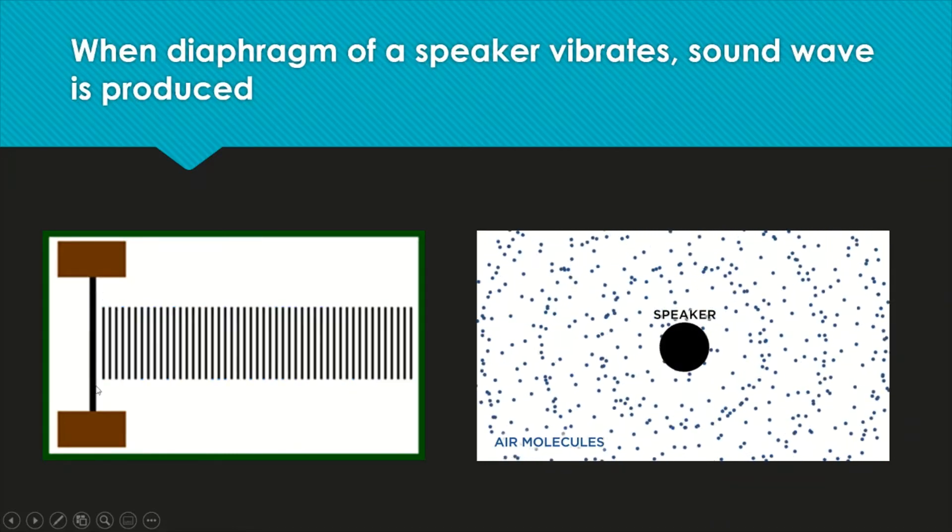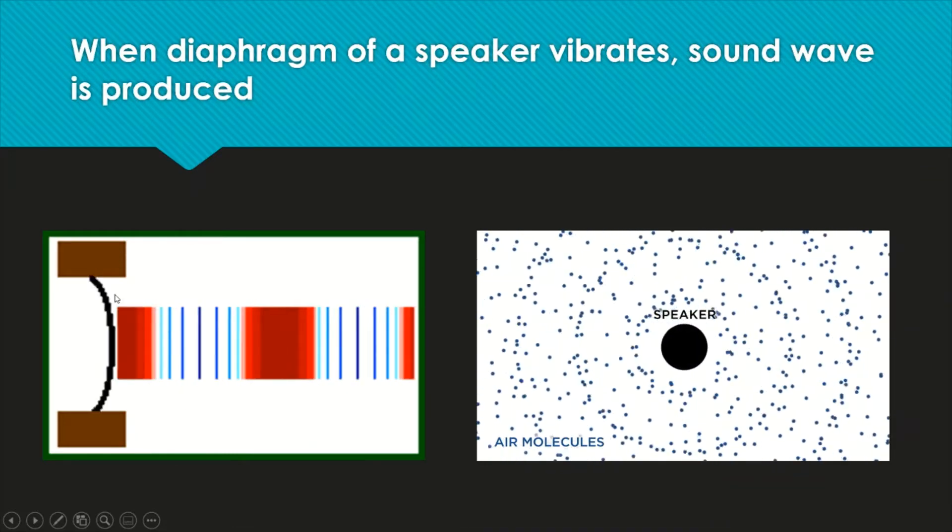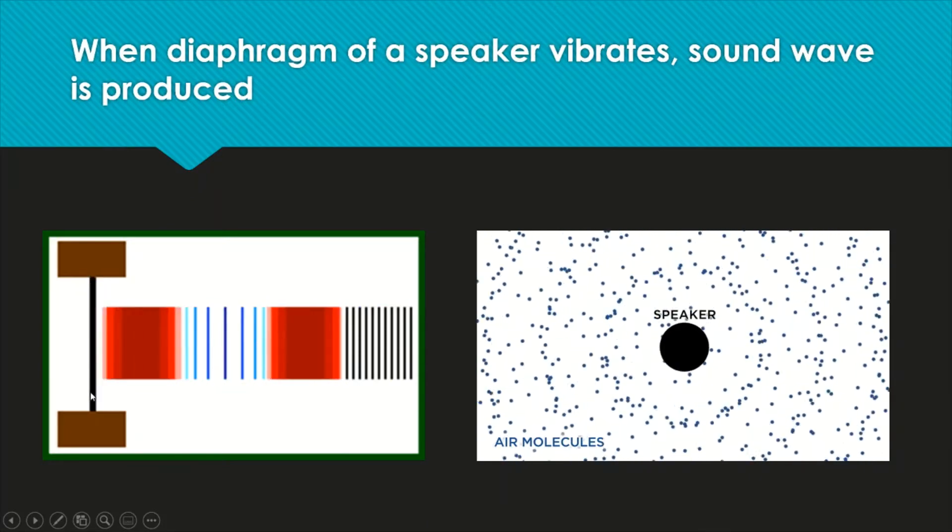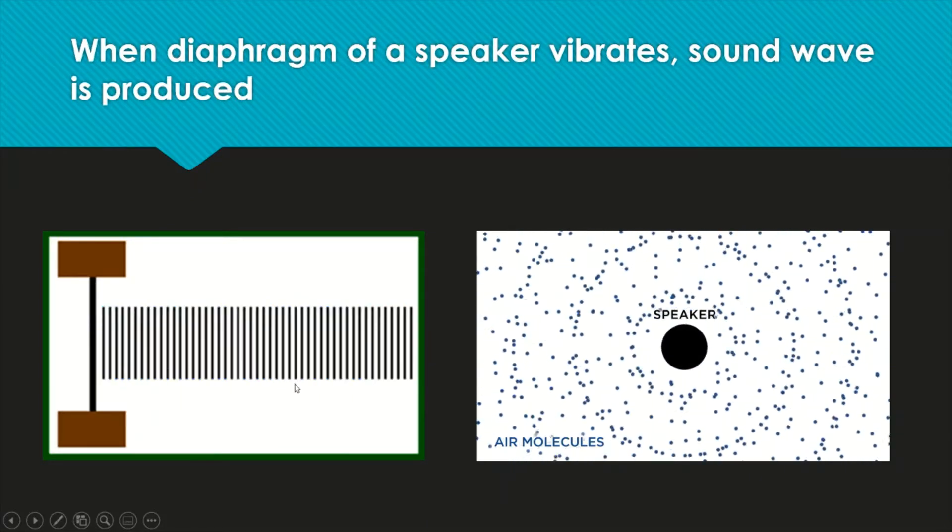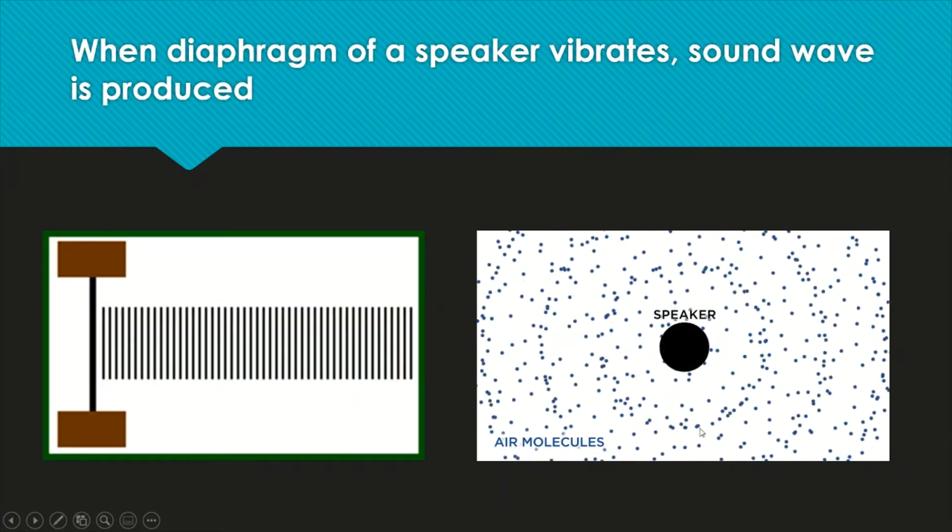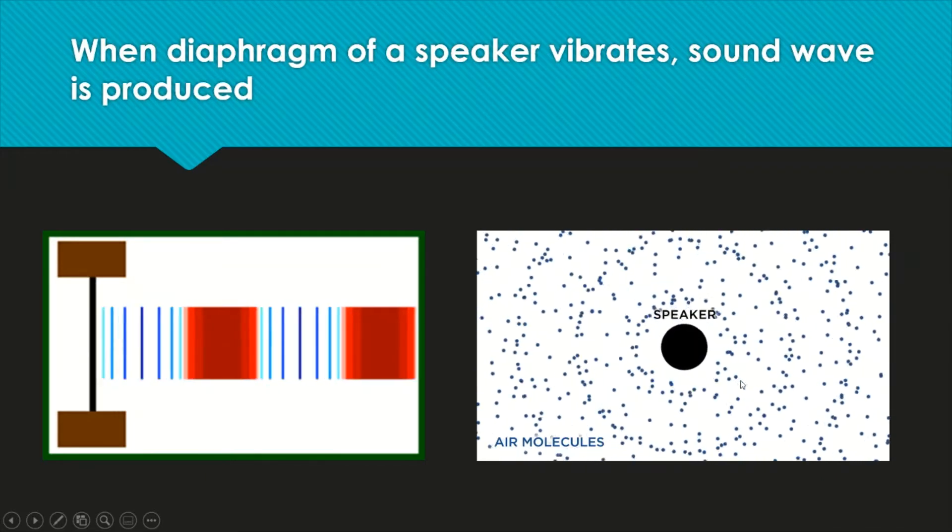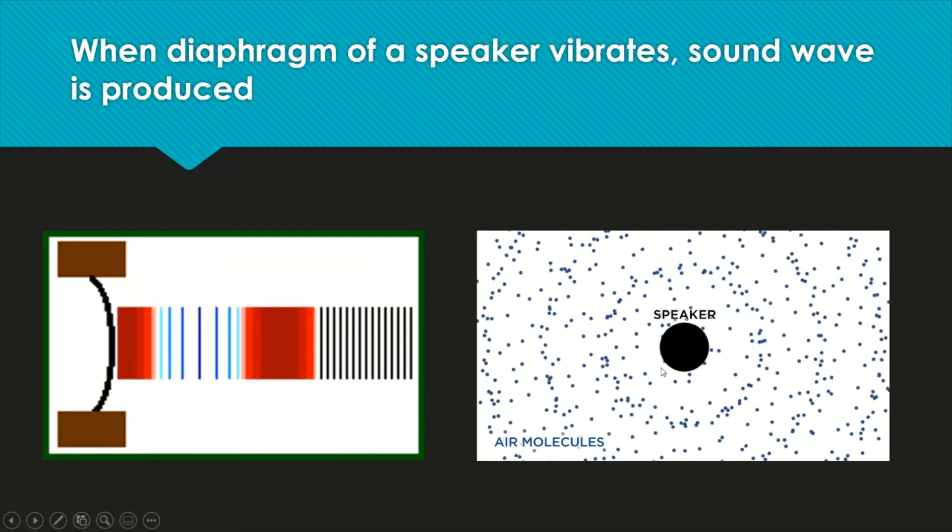When a diaphragm oscillates, the diaphragm is an example of a system. When it oscillates, sound wave is produced, and this sound wave is transmitted to the air around.